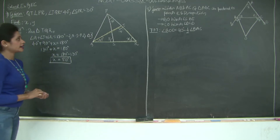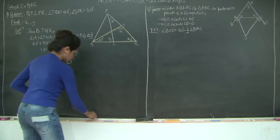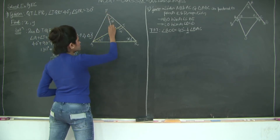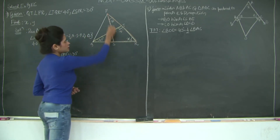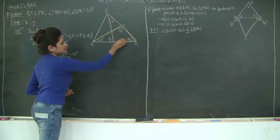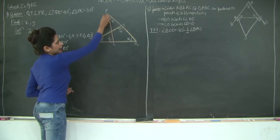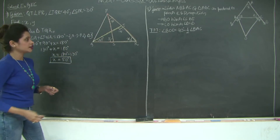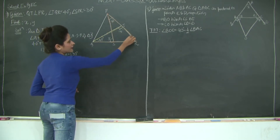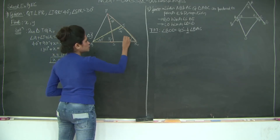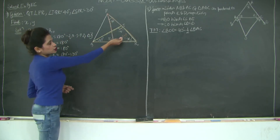Now we'll find the value of angle Y. Taking angle PSR into consideration and extending line RS to point Q, angle Y is the exterior angle for triangle PSR. The exterior angle equals the sum of the opposite interior angles, so Y = 30 degrees + 50 degrees = 80 degrees.